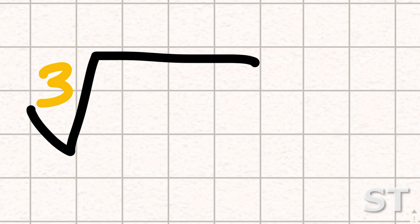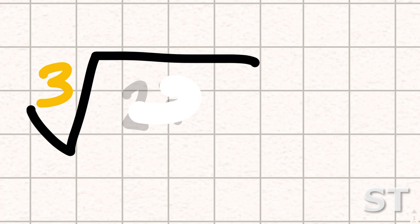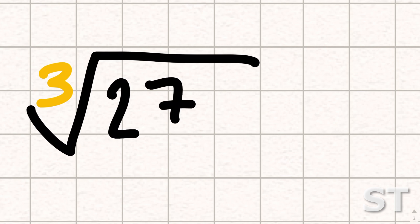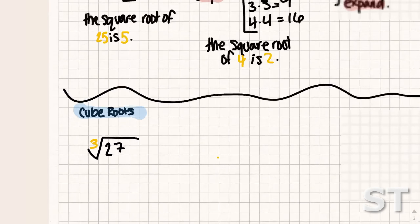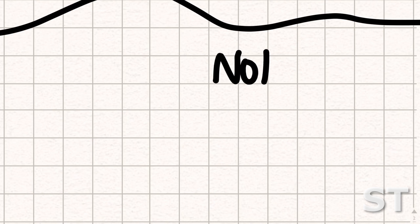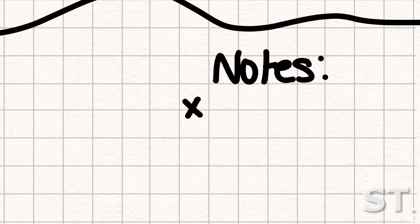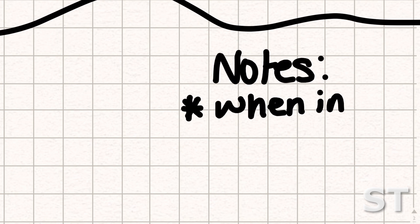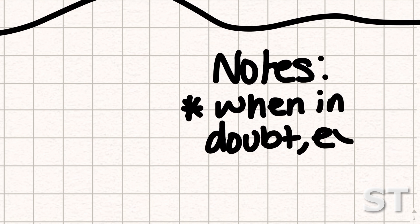I'm going to start off with 27. On the side, like I did last time, there were notes I wrote on the side. If you guys are going to look at these notes, go ahead and write a little note. Put a little star and say: when in doubt — expand out.